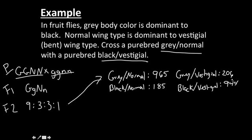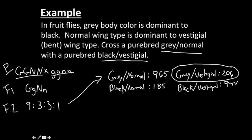We want to identify the recombinants — the ones that don't look like the original parental generation. We compare the F2 offspring back to the parental generation, not the F1. Gray normal was like one of the originals. Gray vestigial — there was no parental that was gray vestigial, so these 206 are recombinants. Black normal — there was no black normal parent either, so those 185 are recombinants. Black vestigial was one of the originals.